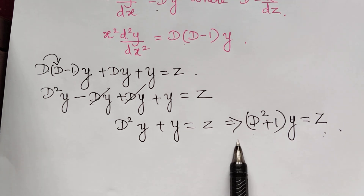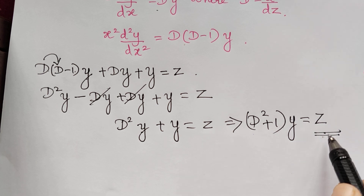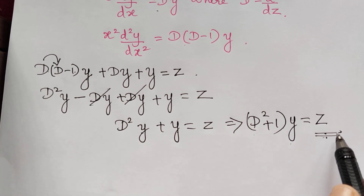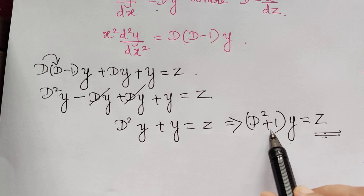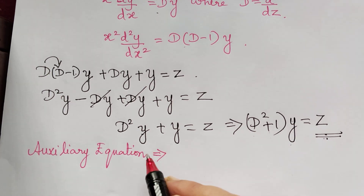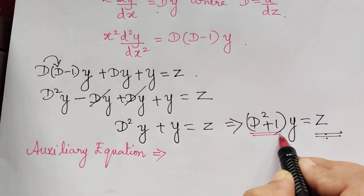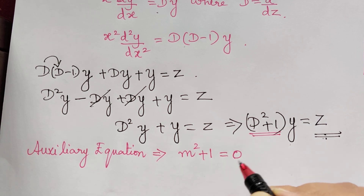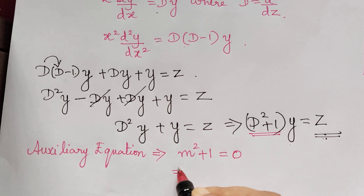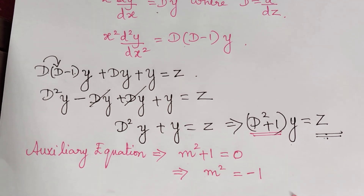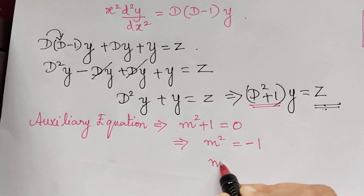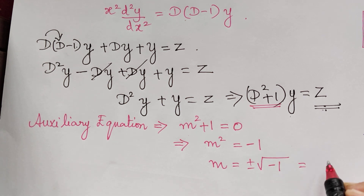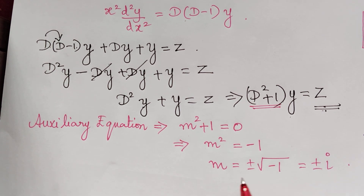First we write the auxiliary equation, then find the complementary function, then the particular integral, and the final solution y equals CF plus PI. To write the auxiliary equation, put D equal to m: m squared plus 1 equals 0, giving m squared equals negative 1, so m equals plus or minus square root of minus 1, which is plus or minus i.